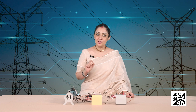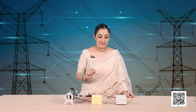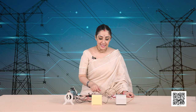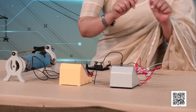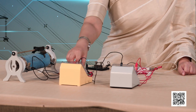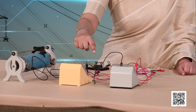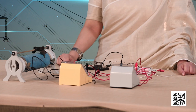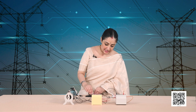We have connected this circuit according to the standard circuit diagram which you can see on your screen. You have to notice that the voltmeter is connected in parallel with the resistance wire, but the ammeter is connected end to end, which means it is in series with the resistance wire.